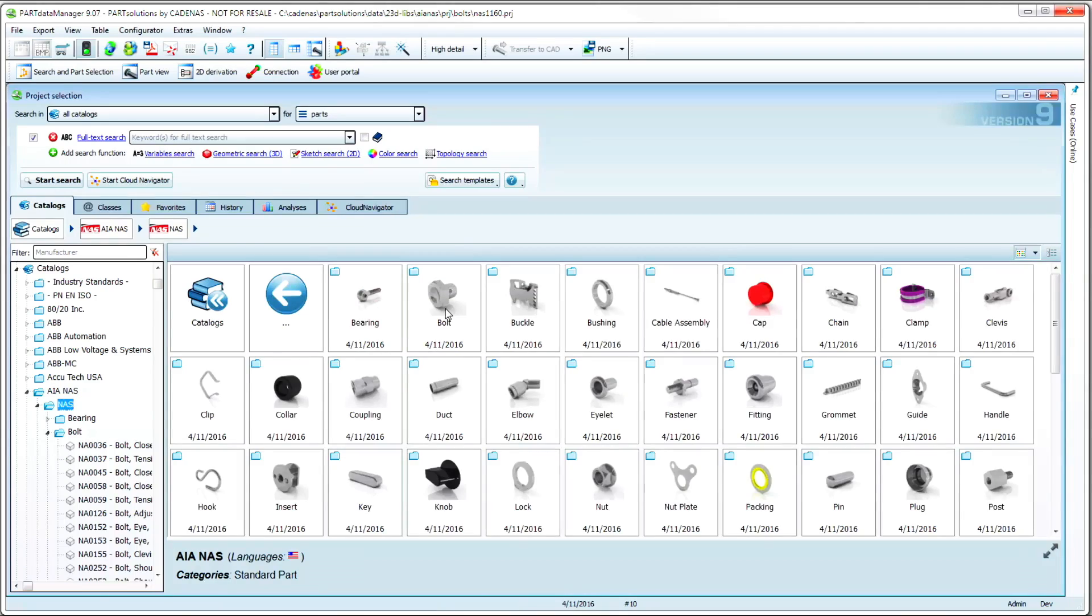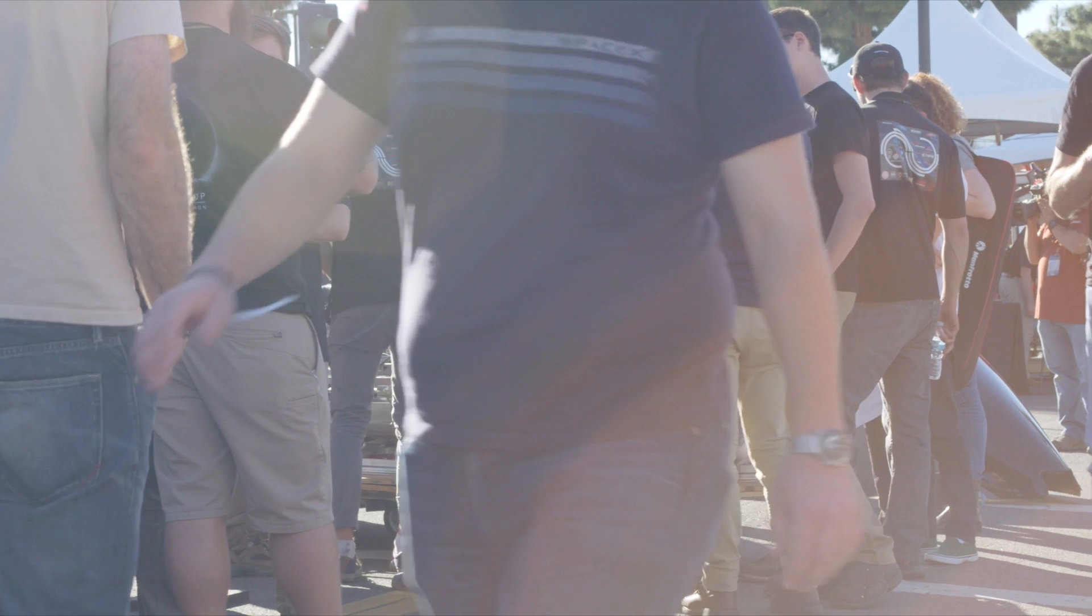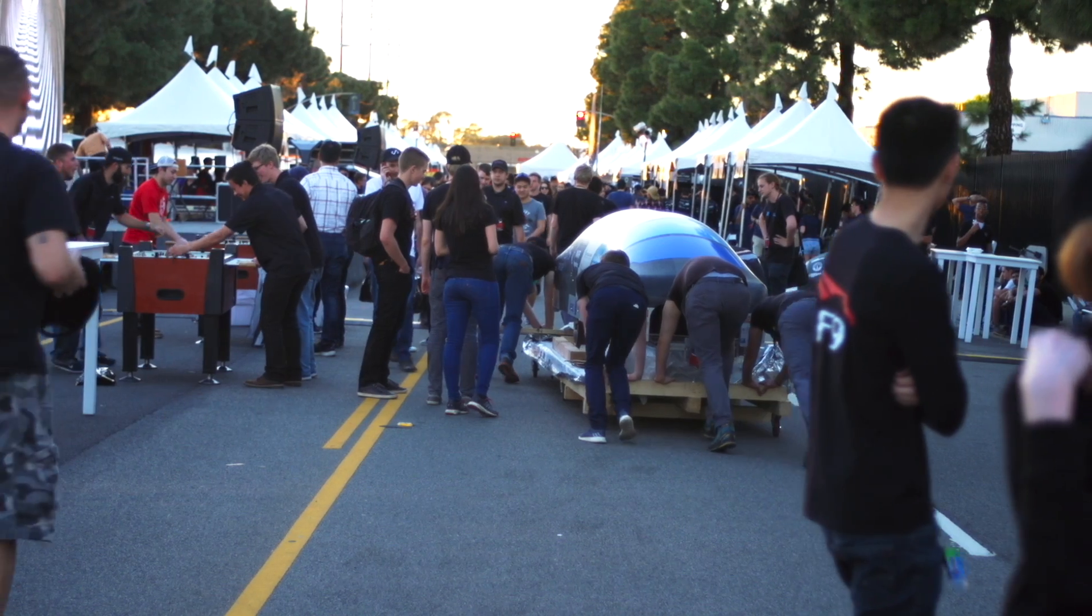Using Cadenas Part Solutions 3D digital database, it allowed us to compete with larger teams in the Hyperloop competition. We were only a very small team of six, other teams were formed of 50 to 100 students. So we were at a big disadvantage.